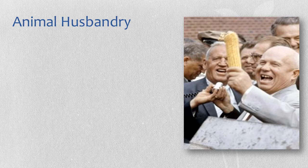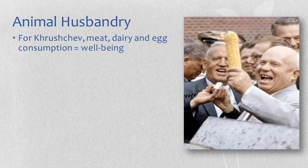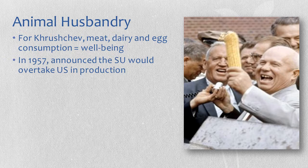Now we'll look at what can be called animal husbandry — but really this is a story about corn. Khrushchev is pictured looking ever so happy holding up an ear of corn. One reason why he was so enthusiastic about corn is because he himself came from the peasant countryside, so he was really focused on improving conditions there. For Khrushchev, the consumption of meat, dairy, and eggs equaled well-being — wealth was connected to the amount of meat and goods you could consume — and he wanted to dramatically increase this level of consumption as a reflection of the country's economic success.